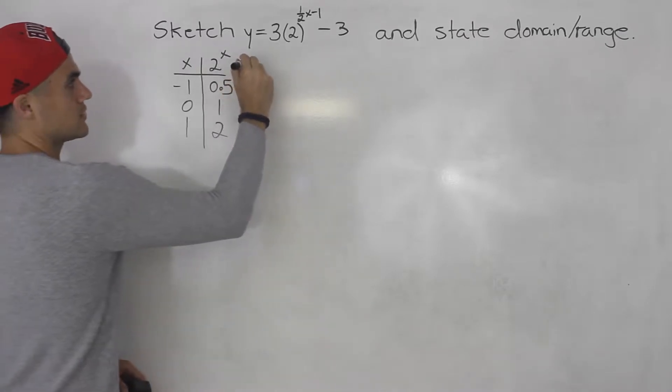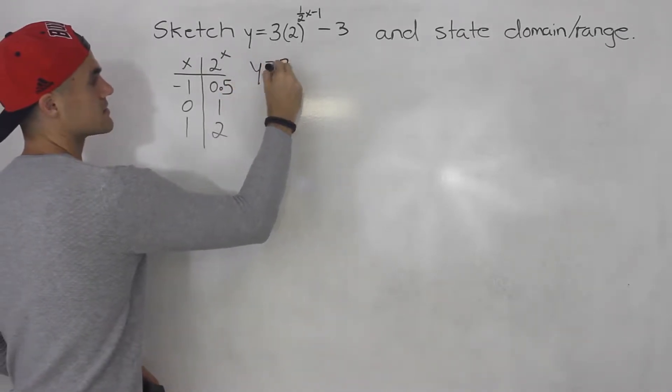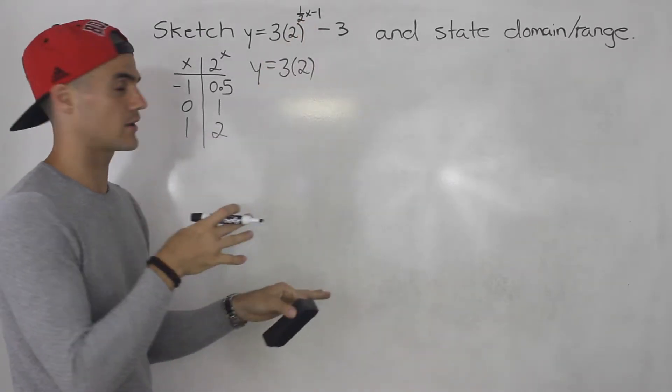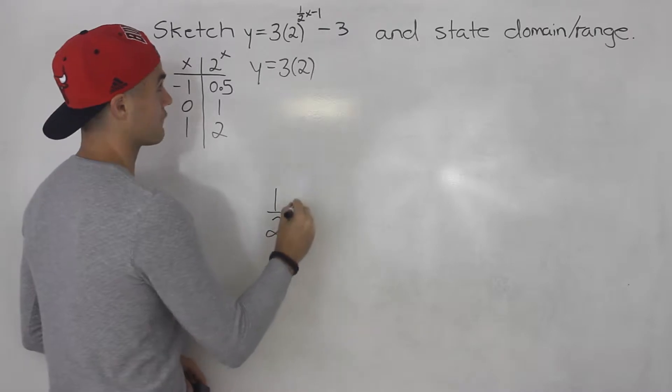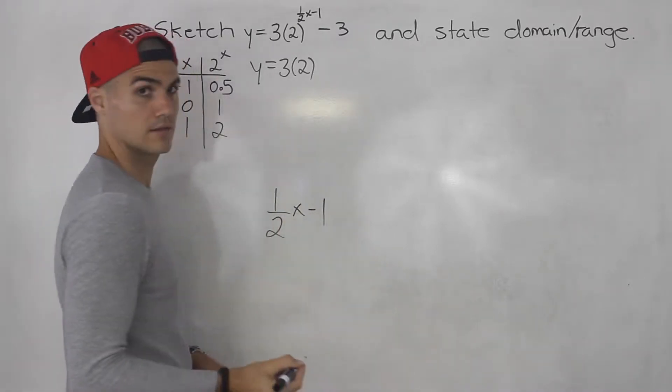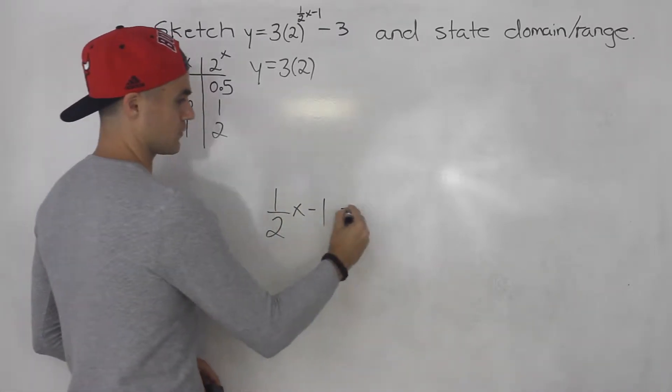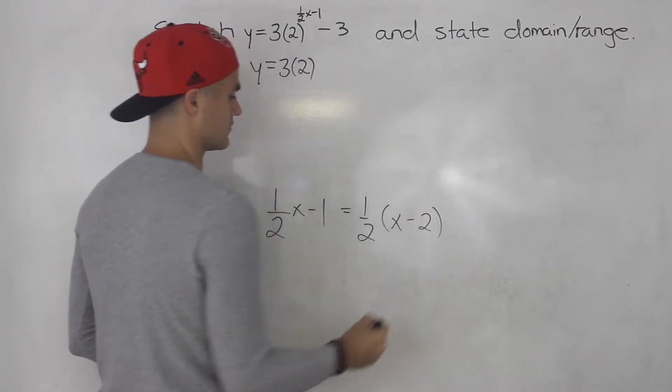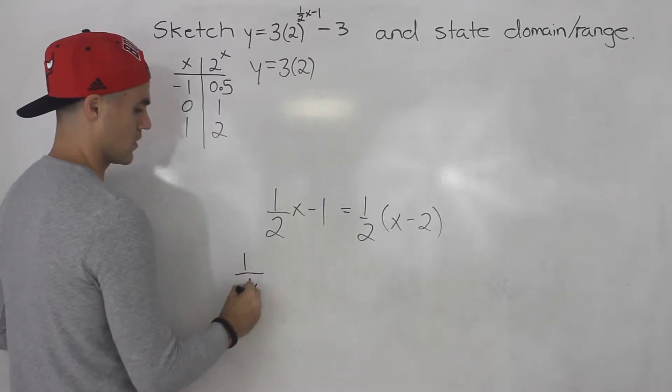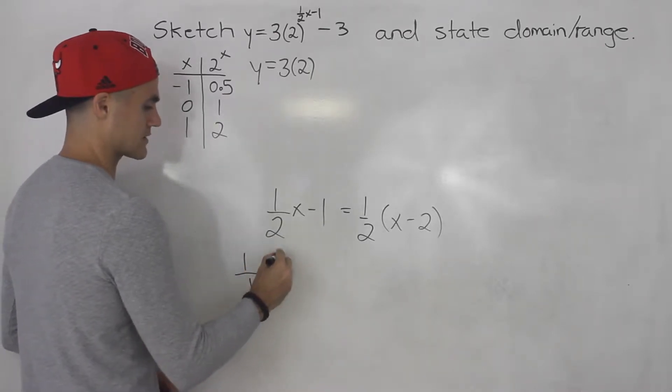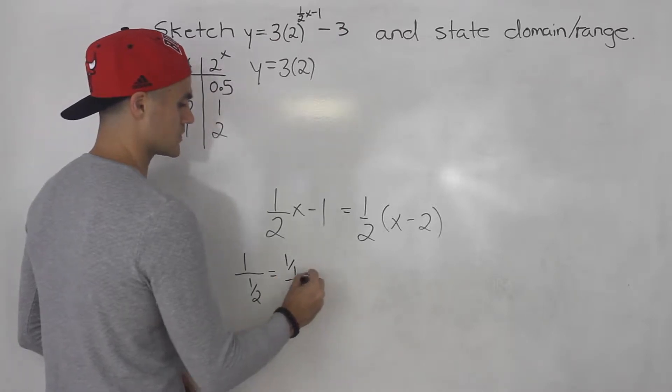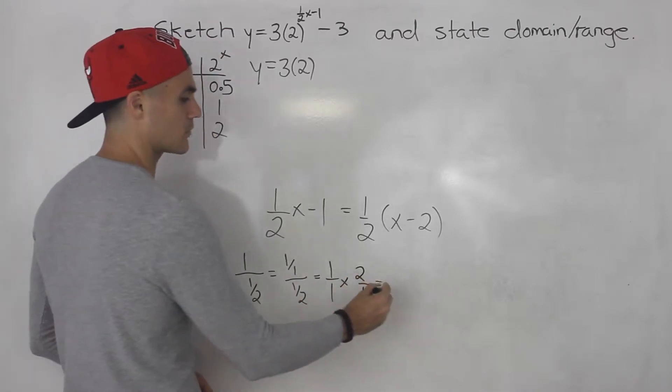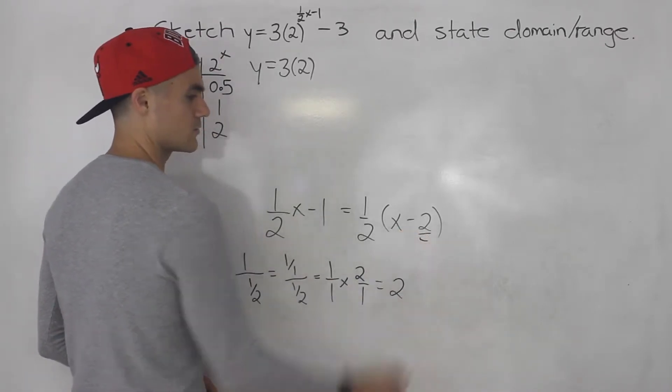Next what we want to do is we want to rearrange this to be in the proper transformation format. Everything is except the exponent. We got to factor out a k value. So in this case we have 1 half x minus 1 in the exponent. So if we factor out this 1 half we'll be left with x minus 2. Basically 1 divided by 1 over 2. That's like 1 over 1 divided by 1 over 2 which is like 1 over 1 times 2 over 1. The reciprocal of that which just gives us 2. Which is how I got that.